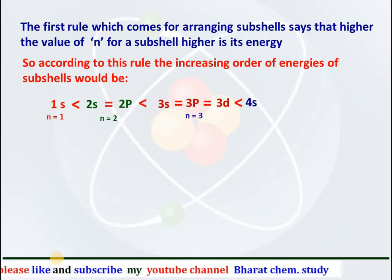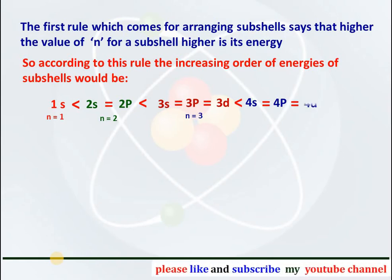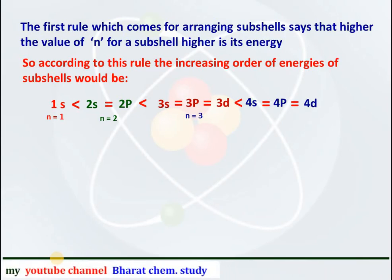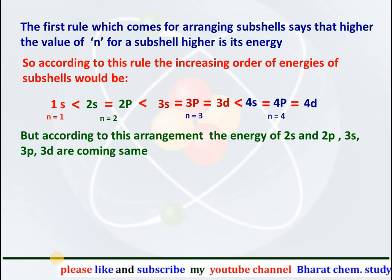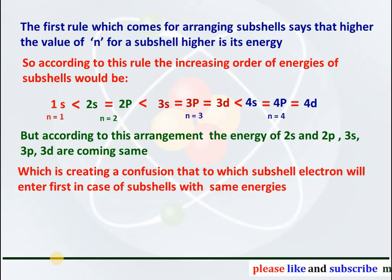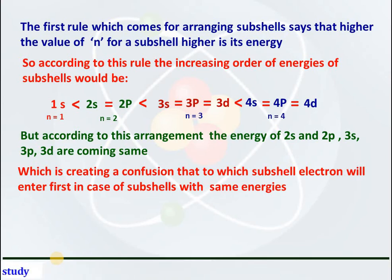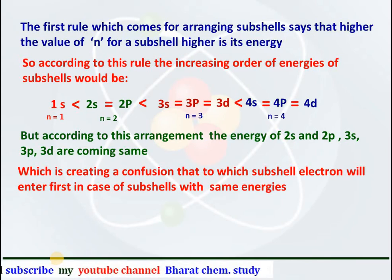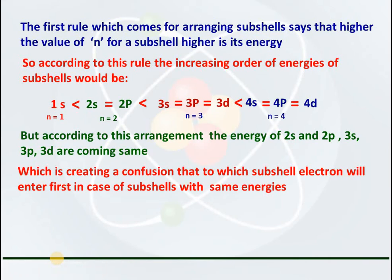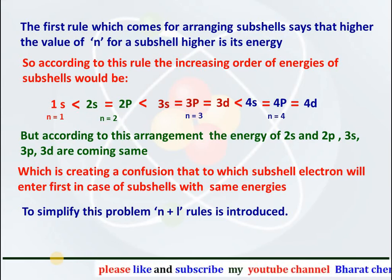The energy of 4s is higher than 3 because it has N value 4. So 4s, 4p and 4d also have the same N value of 4, therefore they have same energies. But according to this arrangement, the energy of 2s and 2p, similarly 3s, 3p and 3d are coming as same, which creates confusion about which subshell the electron will enter first. To simplify this problem, the N plus L rule is introduced.